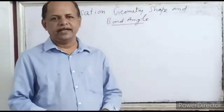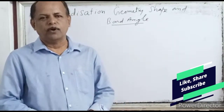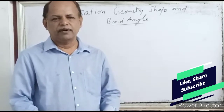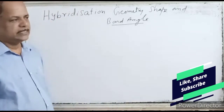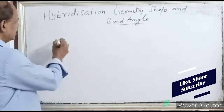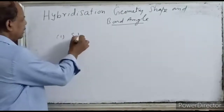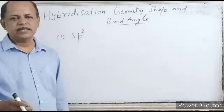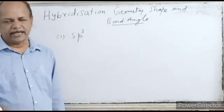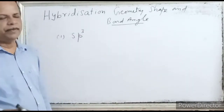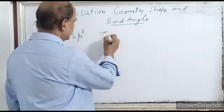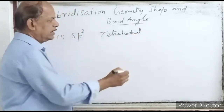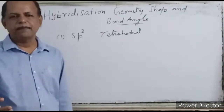Today we will discuss hybridization, geometry, shape, and bond angle. The first hybridization is SP³. In SP³ hybridization, the geometry of the molecules is tetrahedral.